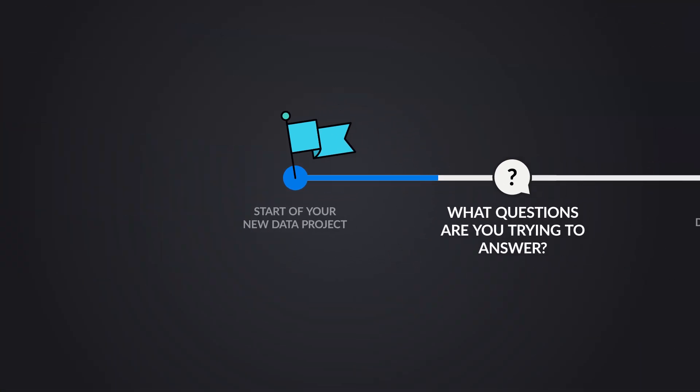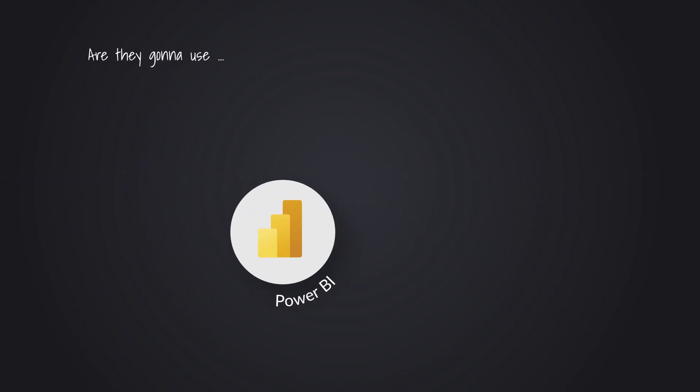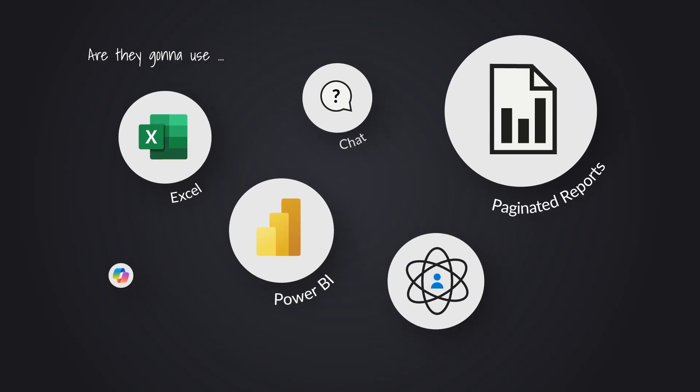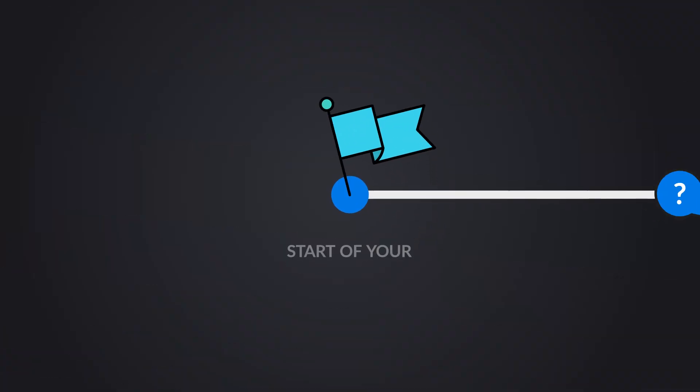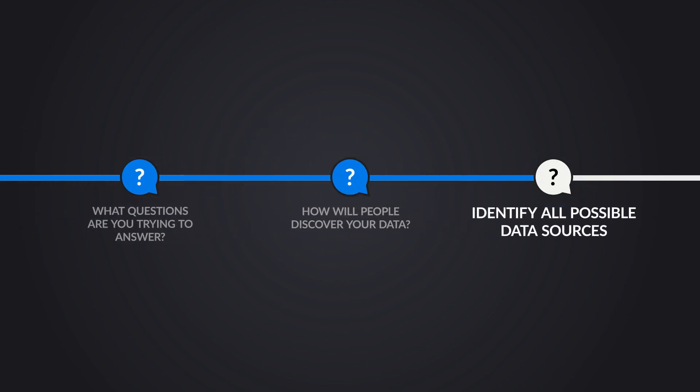Once we know the questions we're going to answer, we need to think about how are people going to discover this data. Are they going to use Power BI? Are they going to use Excel? Are they going to use paginated reports, or some other tool? Are we going to have data scientists building out machine learning models and doing AI against this data? The solution that you design needs to be able to expose the data in a way that it can be consumed in these different ways. Once we know how people are going to consume this data, we got to talk to everybody and try to identify the type and number of all the possible data sources — literally exhaust the possible data sources.